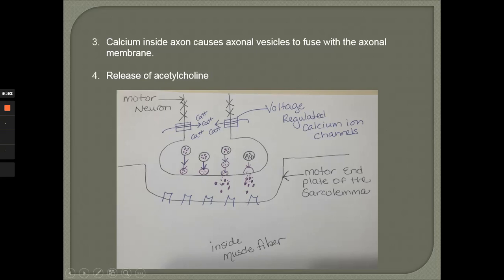Step three: calcium inside the axon causes axonal vesicles to fuse with the membrane. We have vesicles — shown in circles — and inside them is the neurotransmitter acetylcholine. The calcium stimulates the vesicles of acetylcholine to undergo exocytosis: the vesicle migrates to the plasma membrane, opens up to the exterior, and acetylcholine is released out into the synaptic cleft.